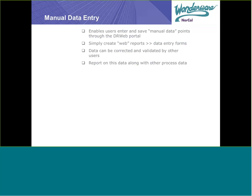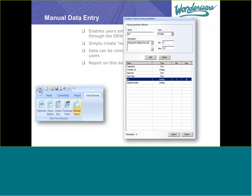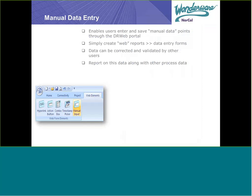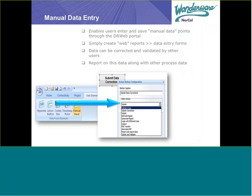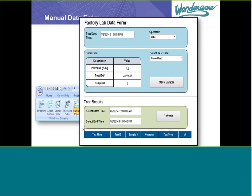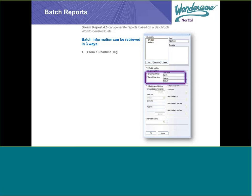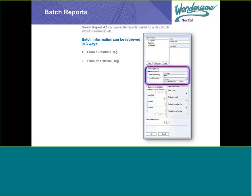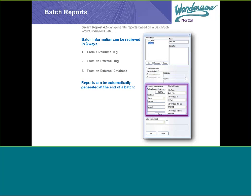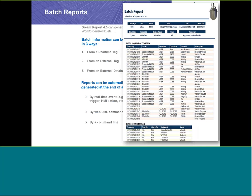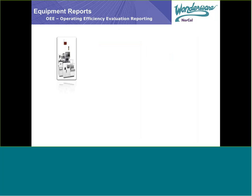Dream Report allows for easy manual data entry. Users can enter and save manual data points through the Dream Report web portal, and you can create web reports using the data entry form. Data can be corrected and validated simply by clicking the Manual Data button and entering your change. You can also create batch reports triggered by real-time events or user commands from a real-time tag, external tag, or external database. Reports can be automatically generated at the end of any batch, on real-time events, or via URL command.